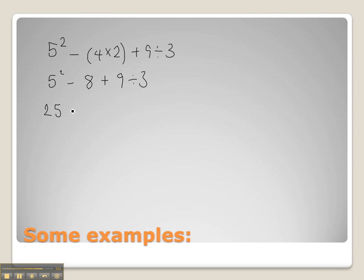So we have 25 - 8 + 9 ÷ 3. There's no multiplication, but there is division, so we're going to do division first: 25 - 8 + 3, since 9 ÷ 3 is 3. Now we can solve left to right with addition and subtraction: 25 - 8 is 17, plus 3 equals 20.